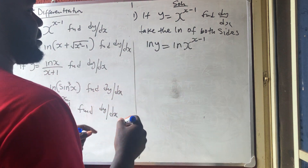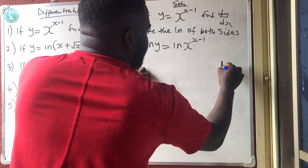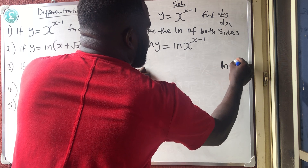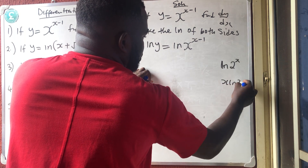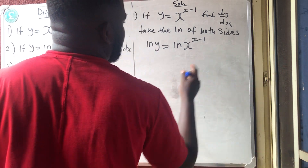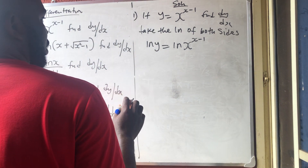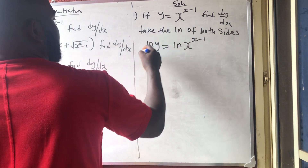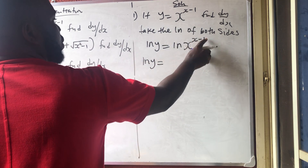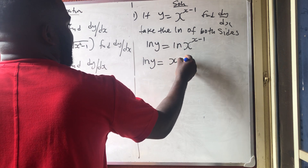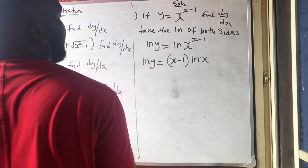Remember that ln is log base e, and if you have ln 2 raised to power x, the x can go to the back to give x·ln 2. That is the laws of logarithms. So ln y is equal to x minus 1 times ln x.